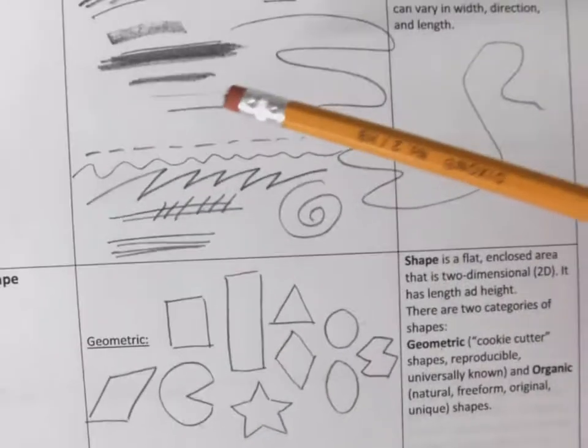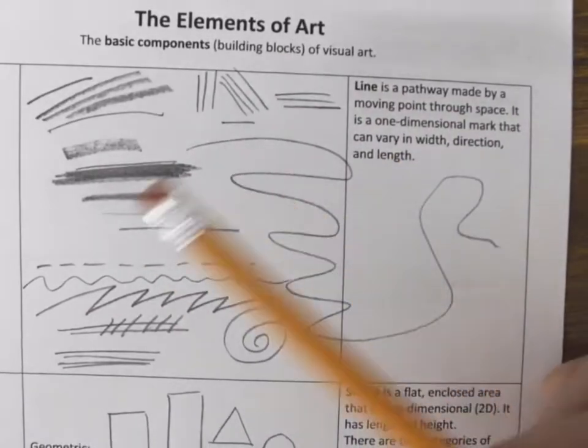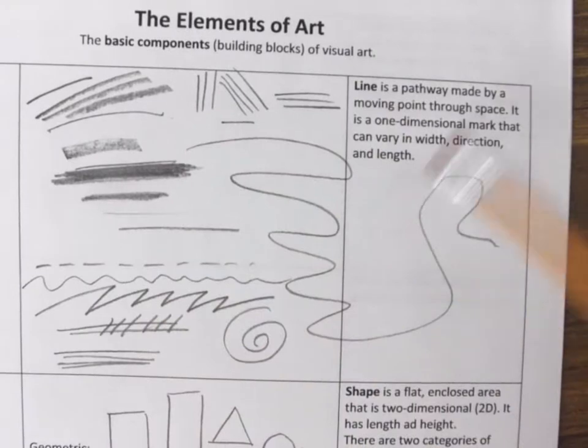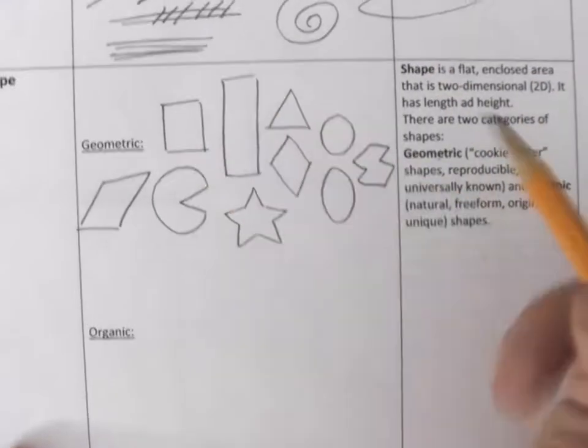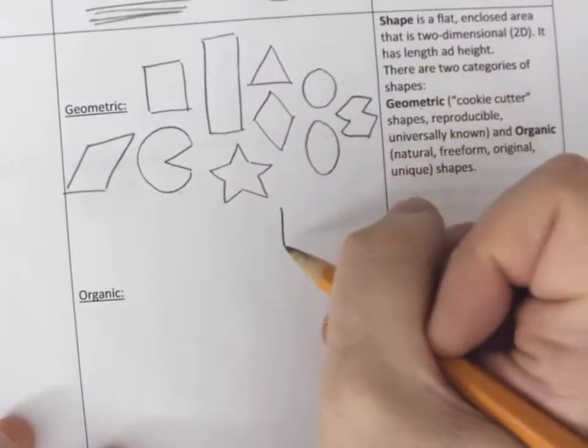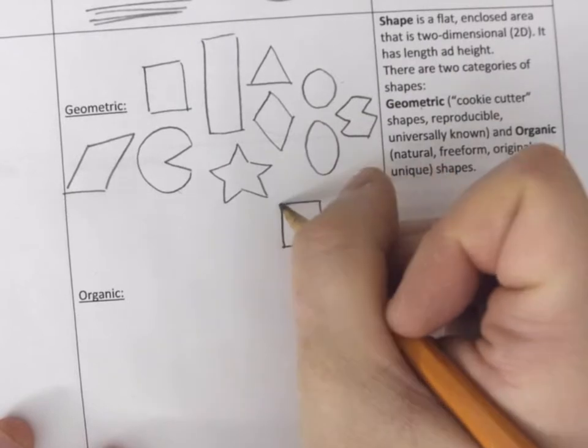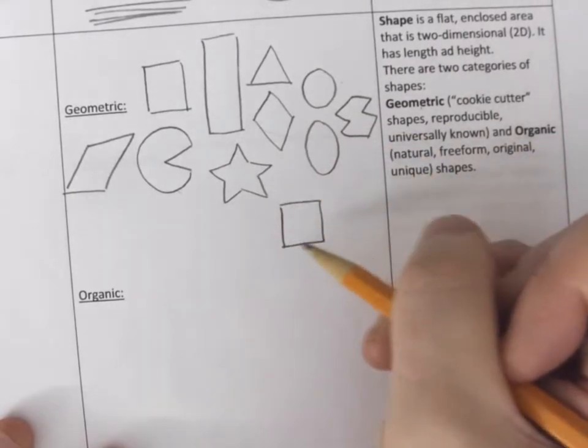When you have a line, lines are one-dimensional and it's a mark moving through space, but when that line starts and then it kind of comes back around and reconnects with itself and it encloses an area,